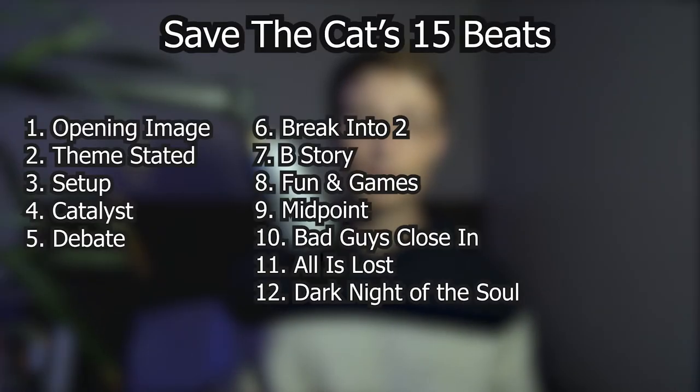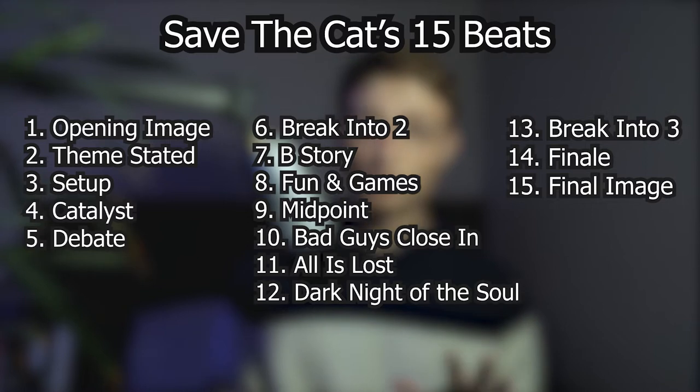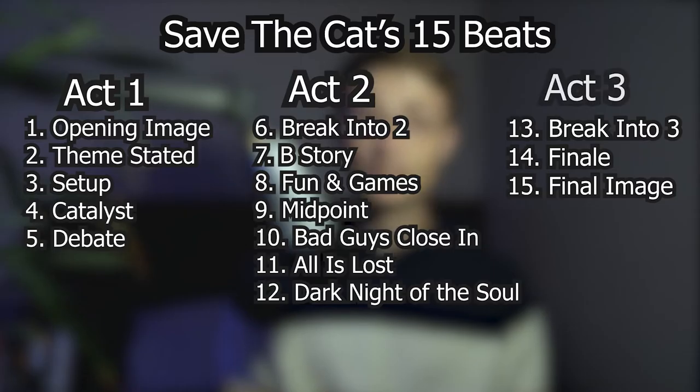So we've got a well-rounded, interesting character — now the question is, what do we actually do with them? How do we map out the journey we plan to send them on? Save the Cat Writes a Novel provides just that map: the beat sheet. The term beat is basically just a moment in your plot. Some beats are a single, quick moment, and some beats are comprised of multiple moments. Save the Cat aims to map out the 15 beats that, according to Brody, you can find in almost every great novel. There are 15 beats separated into 3 acts.